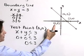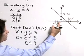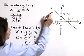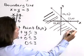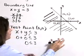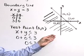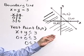So our test point, the origin, satisfies the inequality, therefore each point below this line will also satisfy the inequality. So here we see the graph of the inequality X plus Y is less than or equal to 3.